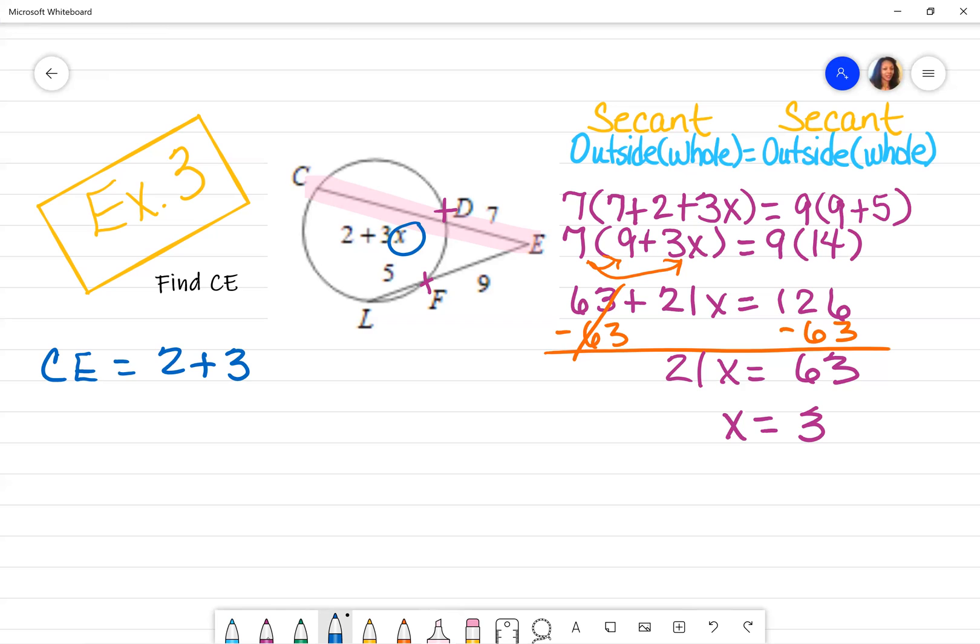So we want to make sure that we account for that. So CE equals the 2 plus 3. Well, instead of X, we're going to use what we just found, which was another 3. And then we're going to add that to the outside because that's part of the whole secant, 7. And once we simplify, we see that CE is equal to 2 plus 9 plus 7, because this is multiplying, not adding. And then finally, CE is equal to 18.